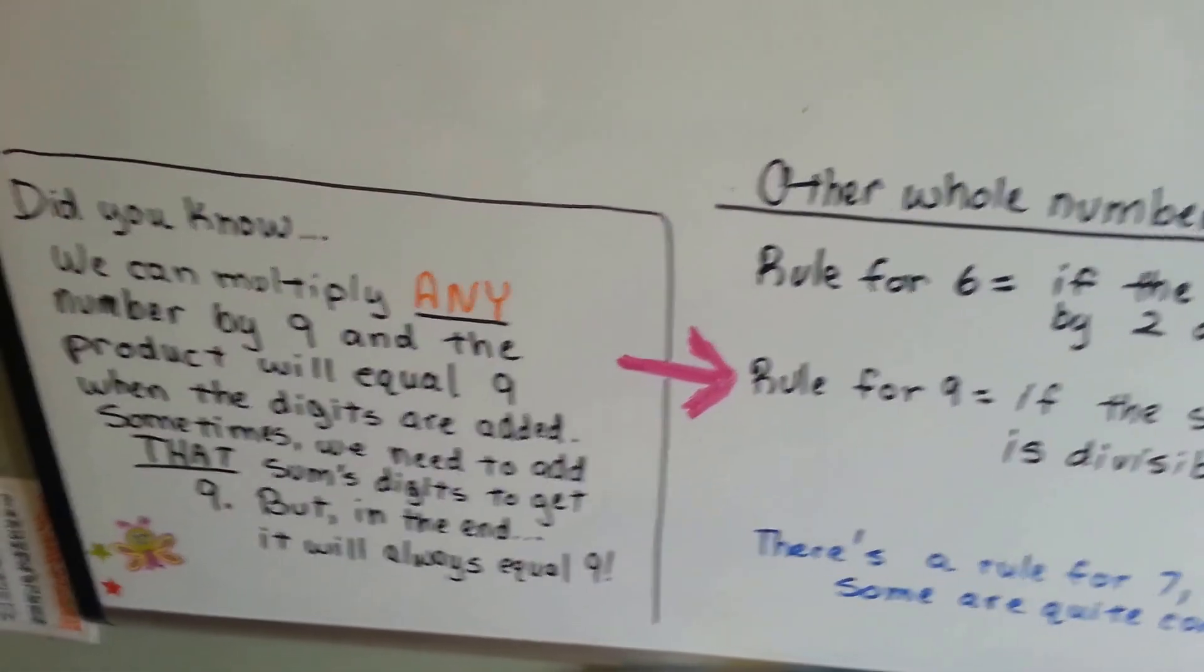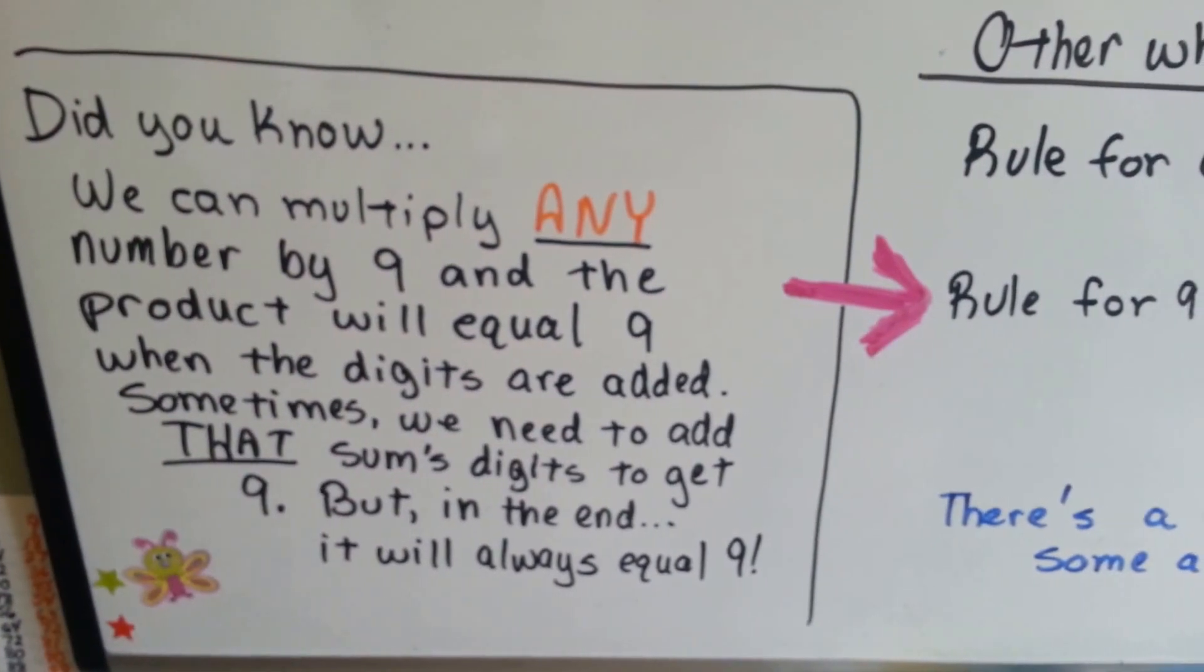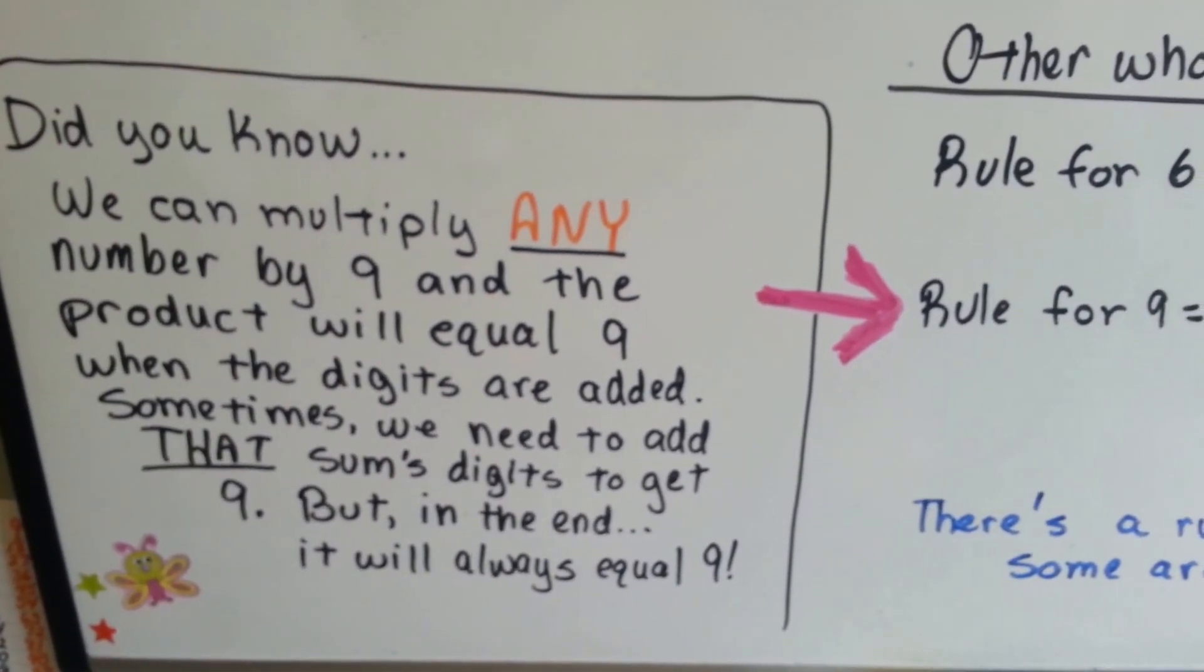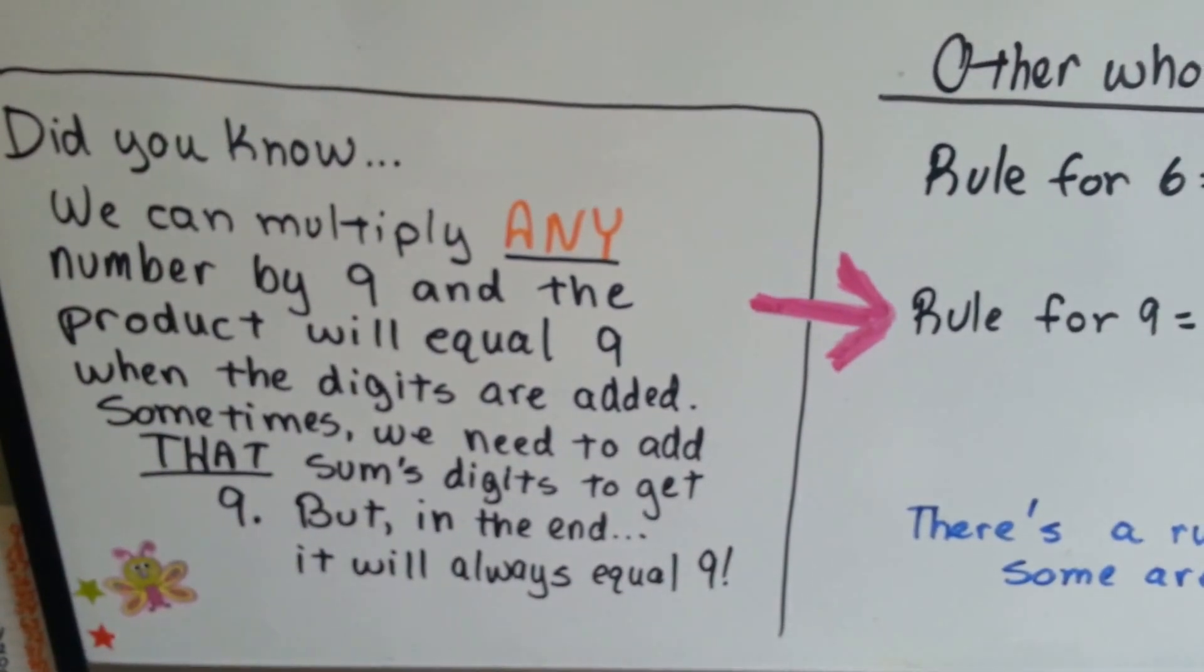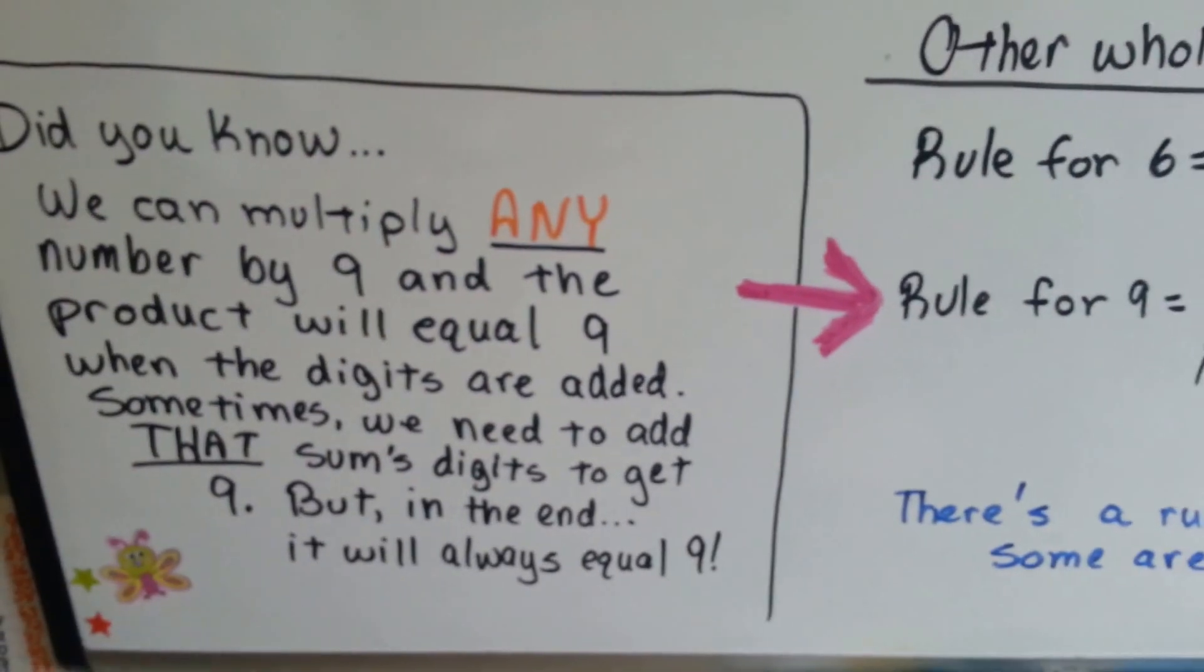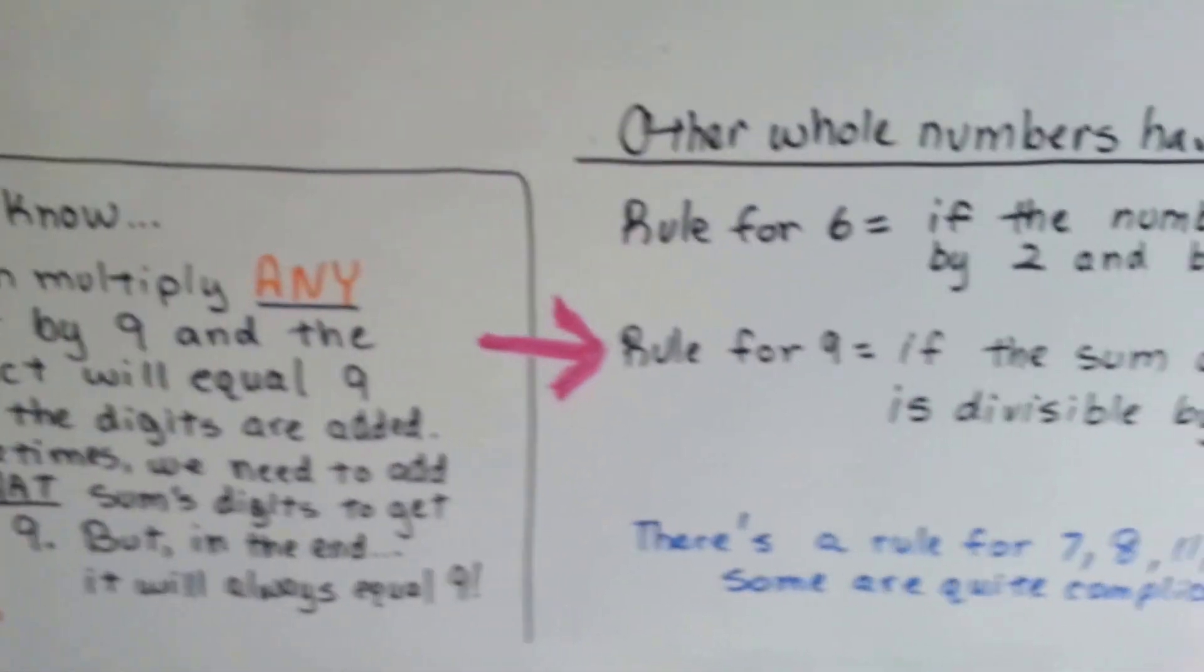And did you know that we can multiply any number by 9 and the product will equal 9 when the digits are added together? Sometimes we need to add those digits together to get 9, but in the end it will always equal 9. Try it. Pick any number on your calculator, multiply it by 9, and try adding up the answer. Try adding up the product.